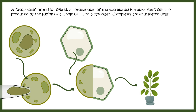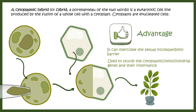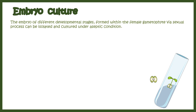Cybridization technique is used for plant tissue culture advancements. Advantages of protoplast techniques include overcoming sexual incompatibility barriers between different species, and enabling study of cytoplasmic or mitochondrial genes, their inheritance, and importance in plant growth.